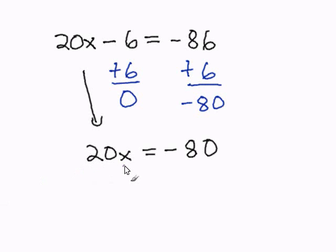This is 20 times x, and to get rid of this 20, I would have to divide by 20. I divide by 20 on one side of the equal sign. I have to do the same thing on the other side. 20 divided by 20 is 1.